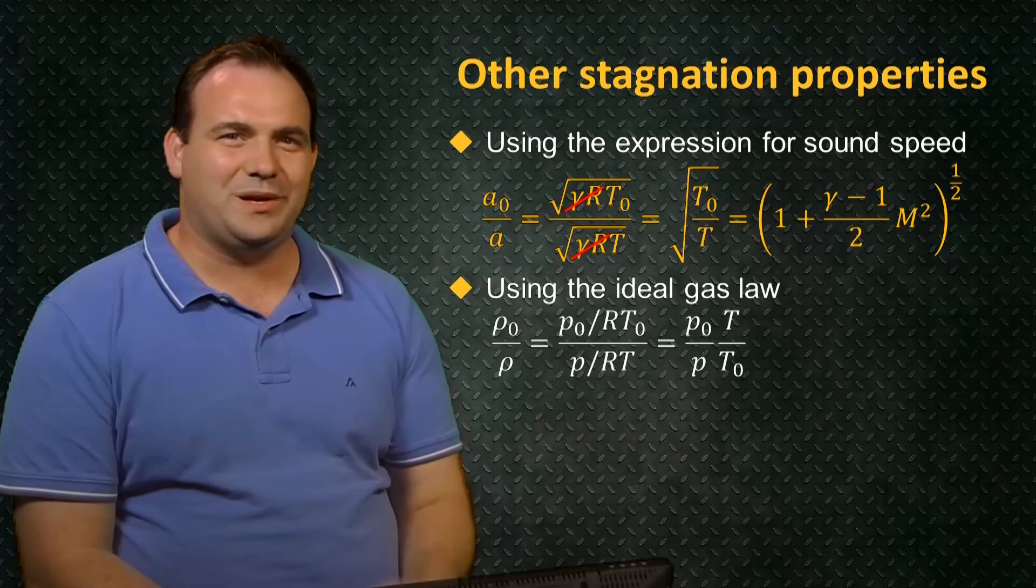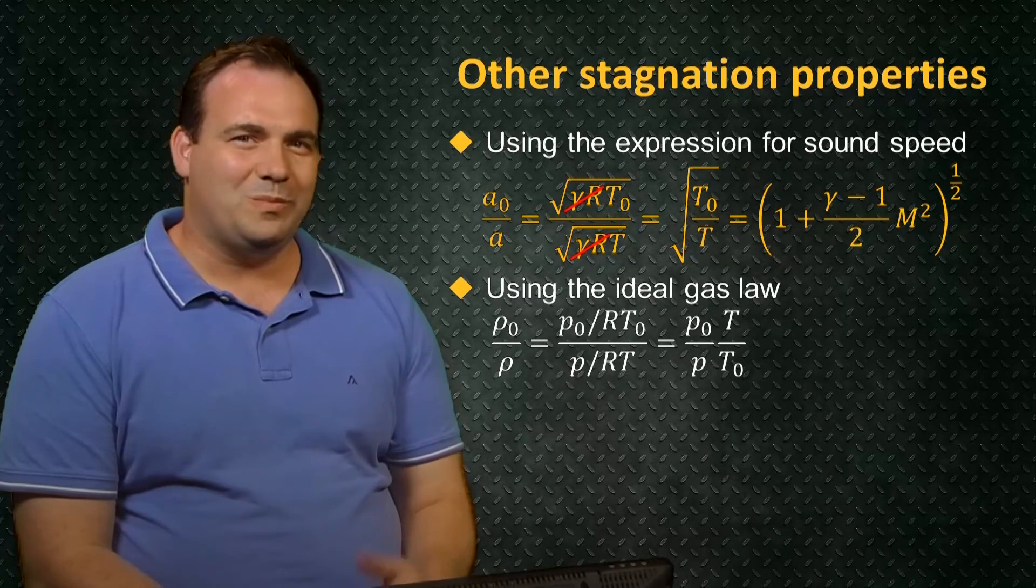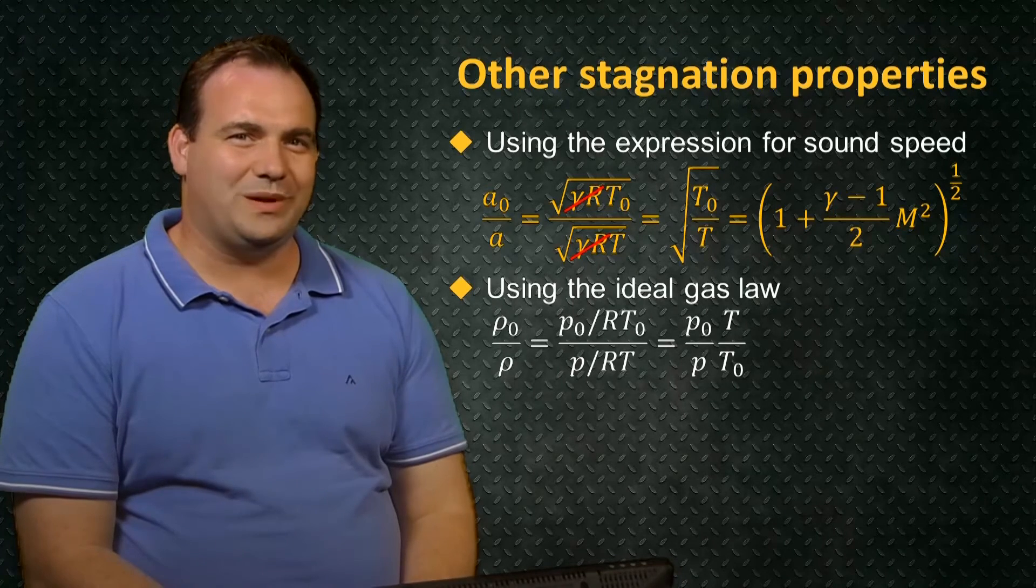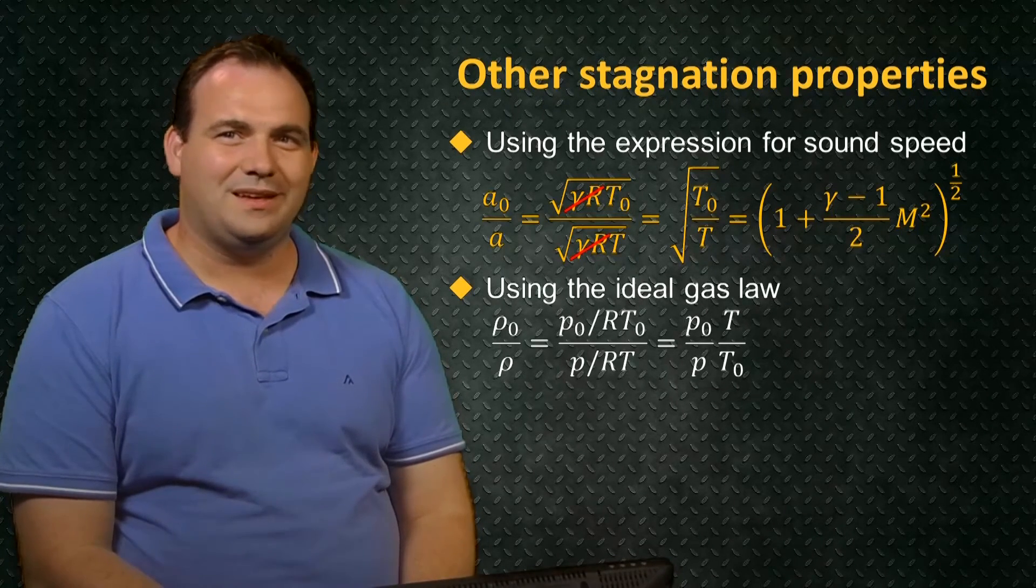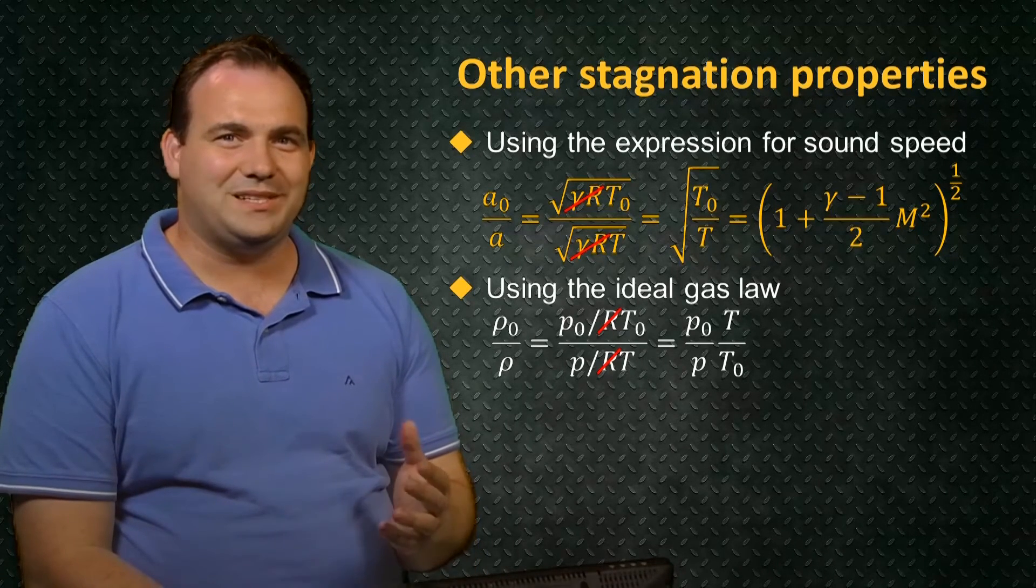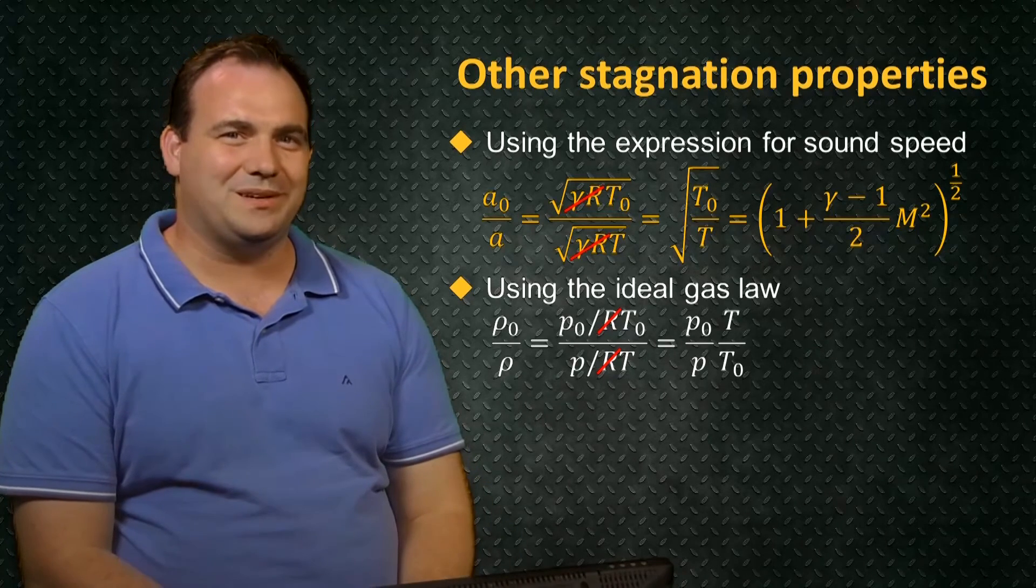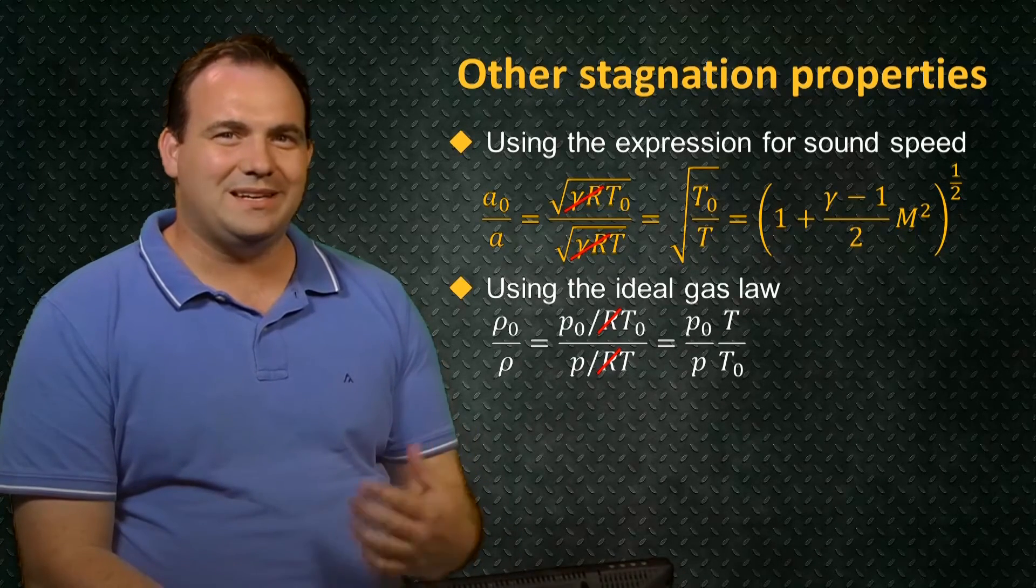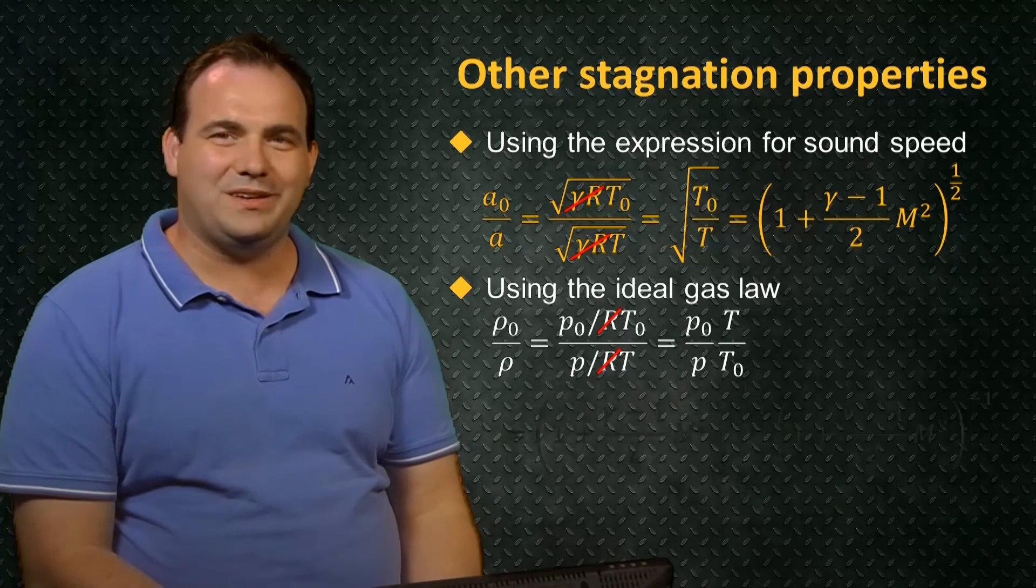To find the ratio of the stagnation density to its value at a Mach number of M, we make use of the ideal gas law to express both of the densities in terms of temperature and pressure. Cancelling out the gas constants, we see that the density ratio is equal to the pressure ratio divided by the temperature ratio. And we already obtained expressions for both of these in terms of the Mach number, and we make use of those here.